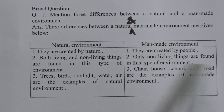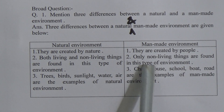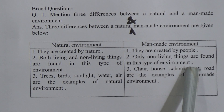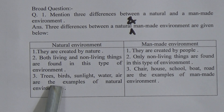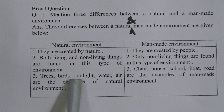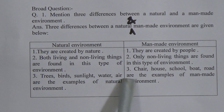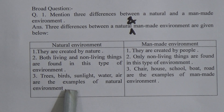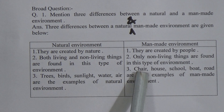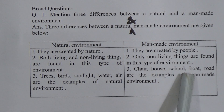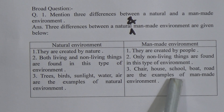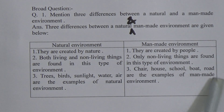Third difference — examples: trees, birds, sunlight, water, and air are examples of natural environment. Chair, house, schools, boat, and roads are examples of man-made environment.